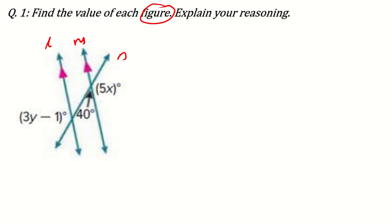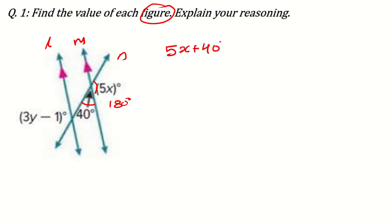What are the properties for the transversal line? Opposite angles are equal, corresponding angles are equal, and alternate interior angles are equal. Now, if we look at this line, it forms a straight line, which means the total angle should be 180 degrees. This 180 degrees is divided into two parts: one is 5x and another is 40. So our first equation will be 5x plus 40 equals 180 degrees.